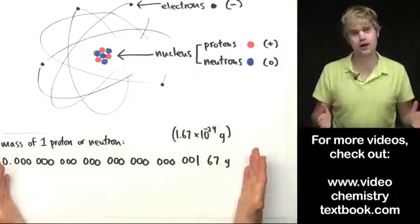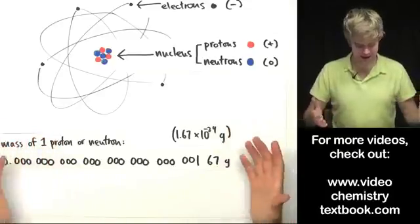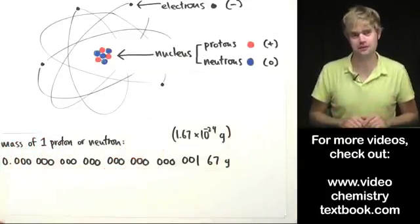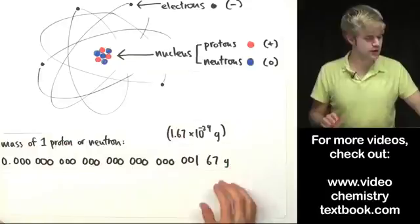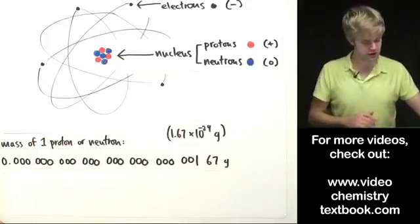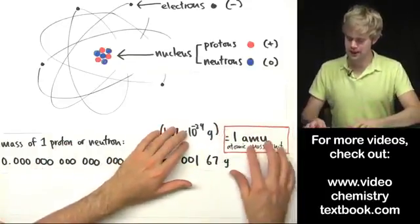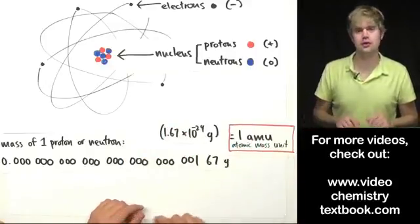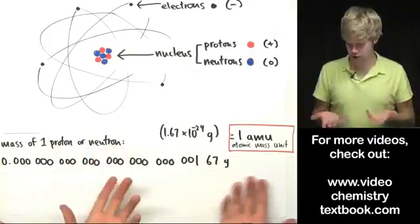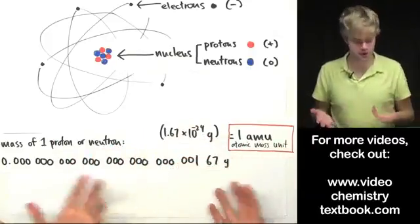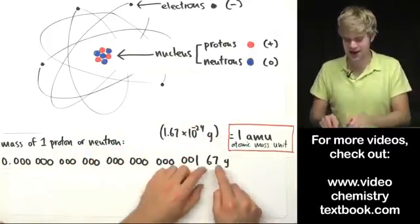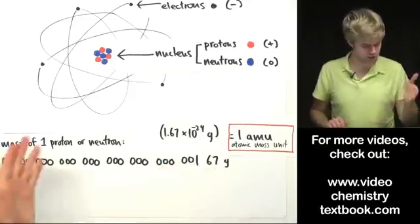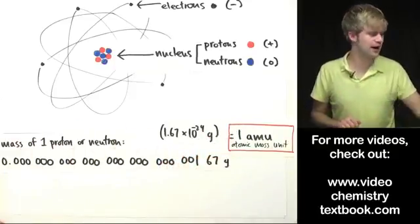But however you write this, it's a really tiny unwieldy number. So scientists came up with another way to measure the mass of a proton or neutron, and that's using a unit called the AMU, the atomic mass unit. And they said, okay, one proton or one neutron weighs about 1 AMU. That's a lot easier to use than this measurement here. So proton or neutron weighs about 1 AMU.